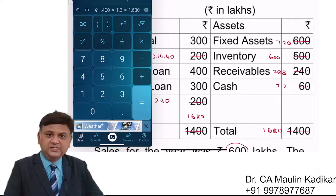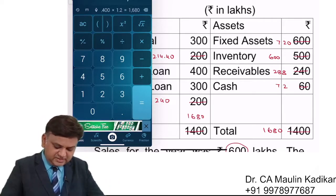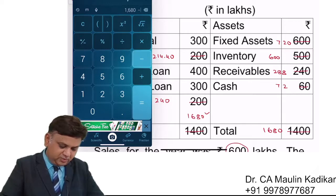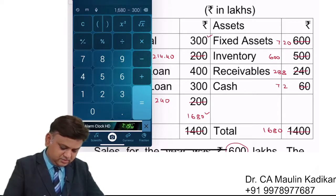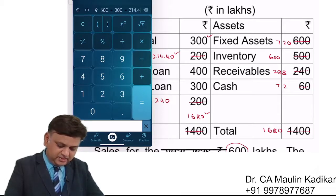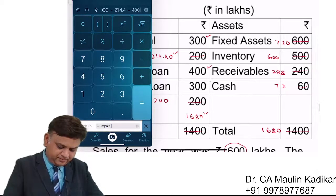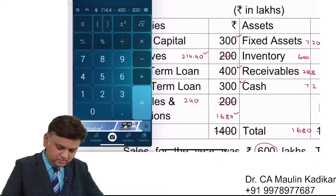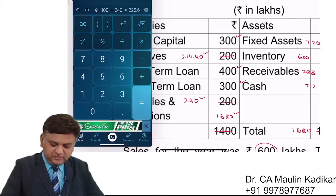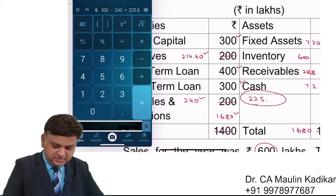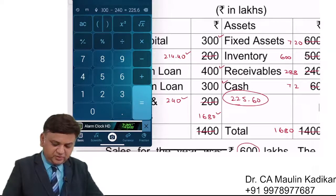Now from 1680 we deduct the known liabilities: 300 (share capital), 214.4 (revised reserves), 400, 300 (short-term loan), 300, 240, and 240. So the external financing required — that is the EFR — comes to 225.6 lakhs. This is the first working that we are required to make.